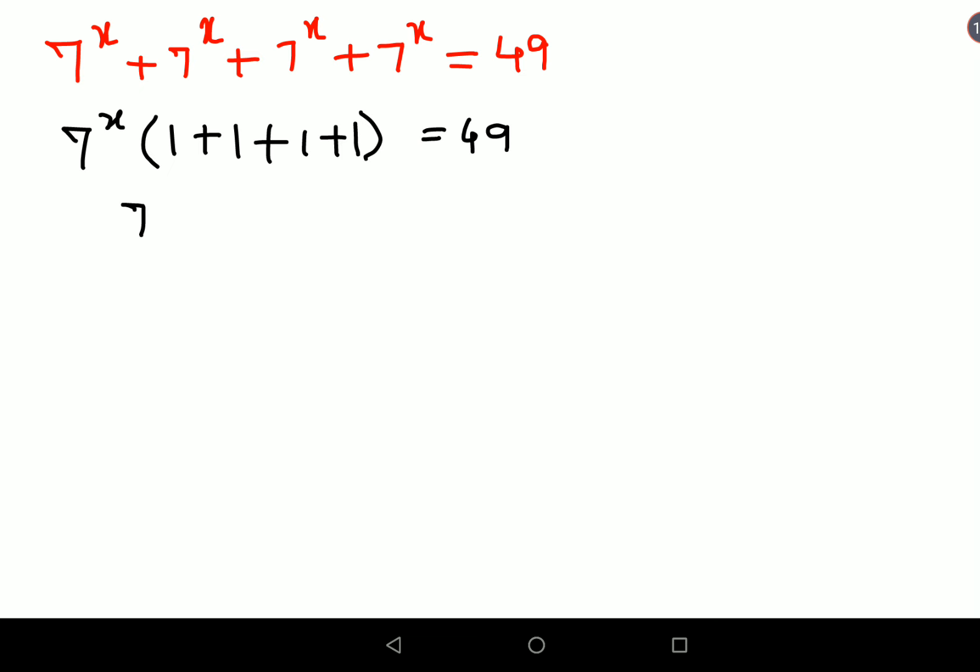So now this eventually looks like 7^x × 4 = 49. Now since we want to find the value of x, we'll try to keep the variable on one side and the numbers on another side. For that, we will divide both sides by 4.